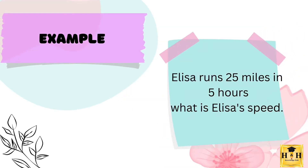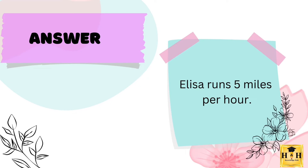For example, Alyssa runs 25 miles in 5 hours. What is Alyssa's speed? The answer is Alyssa runs 5 miles per hour. This is because the total distance is 25 miles divided by the total amount of time, which is 5 hours, giving a speed of 5 miles per hour.